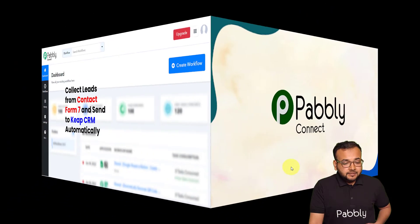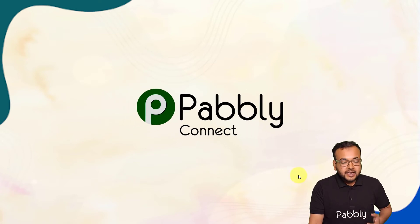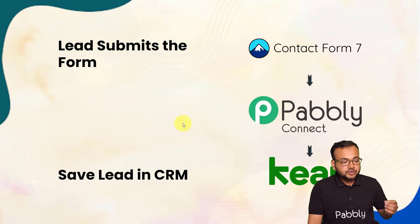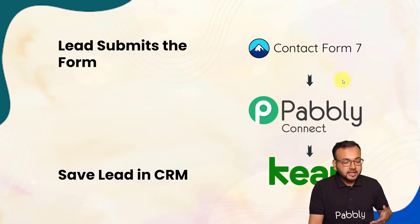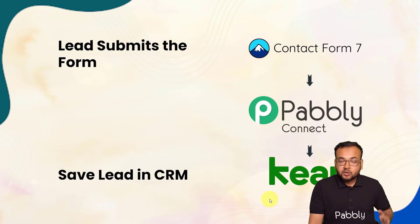To set up this automation, we are using Pabbly Connect, which is an integration and automation tool. The flow of our automation will look like this: as and when any lead submits the form you have created from the Contact Form 7 plugin, the same lead will be delivered to your Keep CRM automatically and will be saved there as a contact. So let's start setting up this automation together.